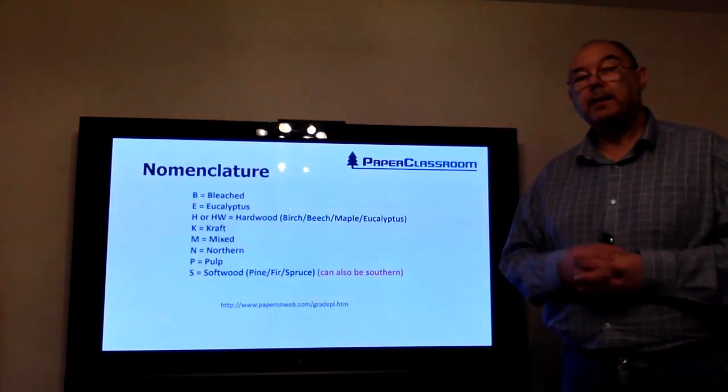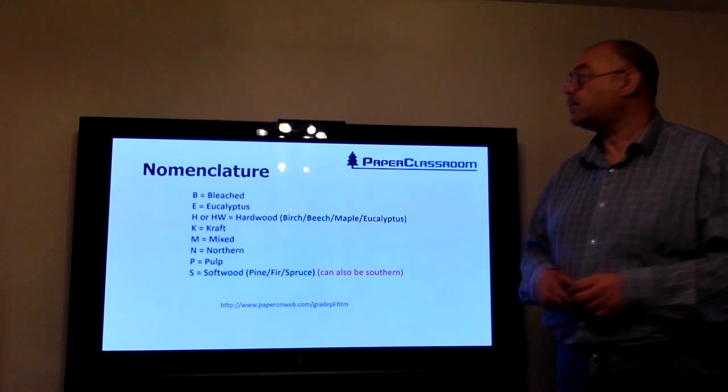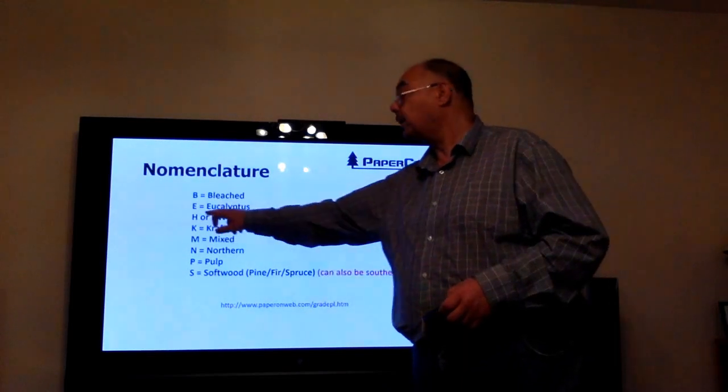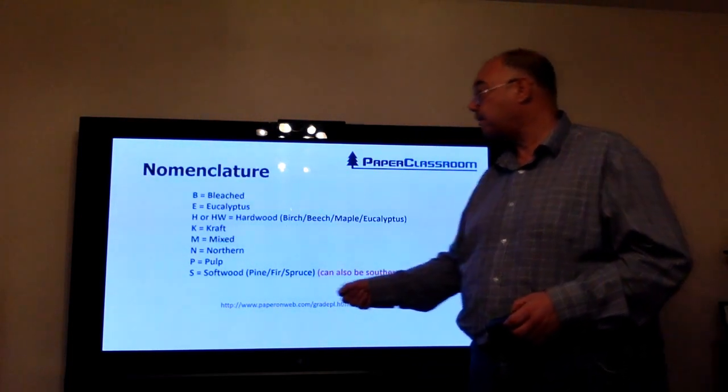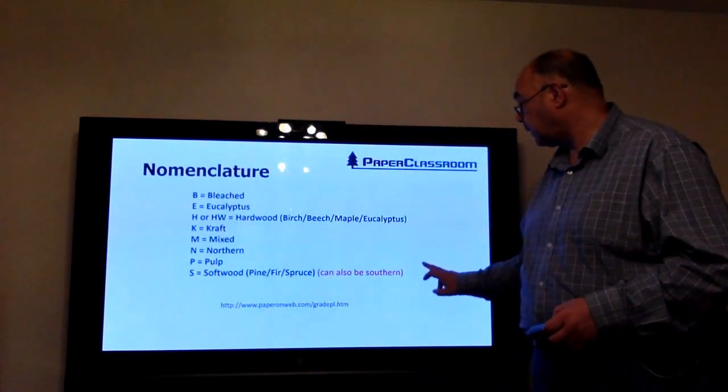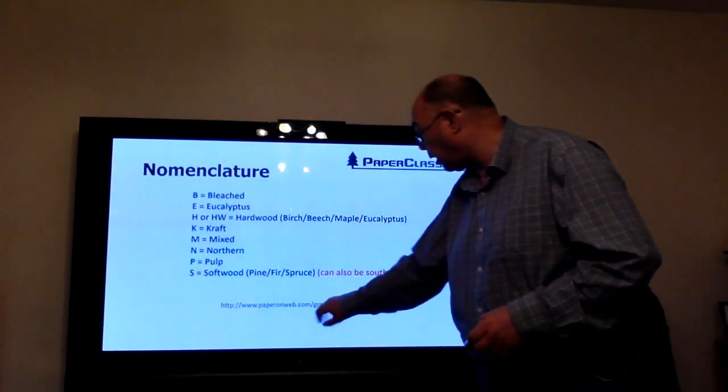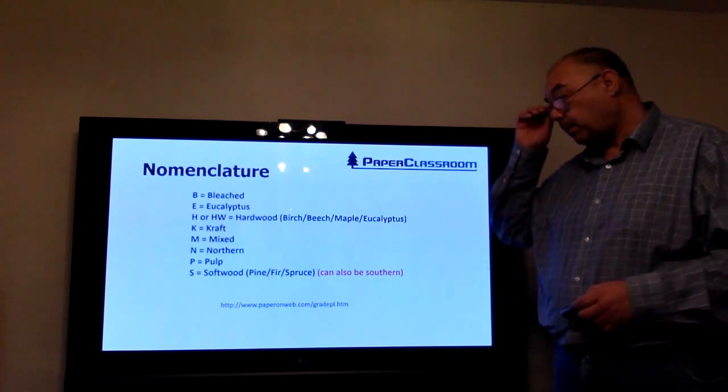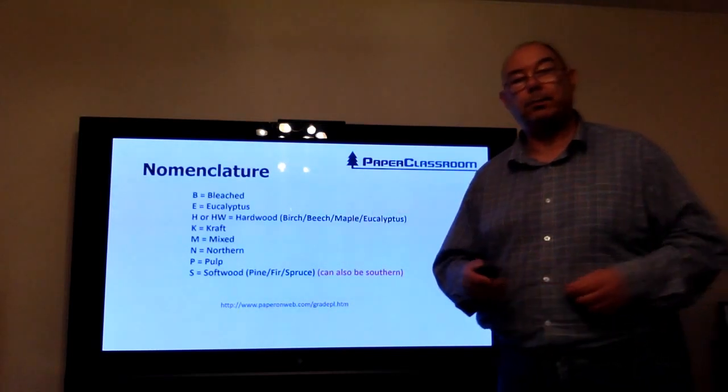It's important to understand the nomenclature of pulping processes. We tend to use lots of letters for shorthand, for acronyms. So the more common ones are, as you see: B for bleached, U for eucalyptus, H or HW for hardwood, K for kraft, N for northern, M for mixed fibers or mixed trees, P for pulp, and S is usually softwood but it could also be southern. If you go to this website here at paperonweb.com, click on the menu at the side for grades. When you get there, click on the menu at the top for pulp types, and you'll see a whole range of all the different types of pulps that are produced in the world.